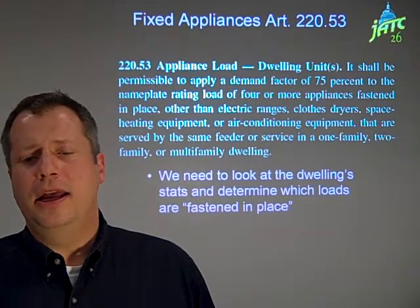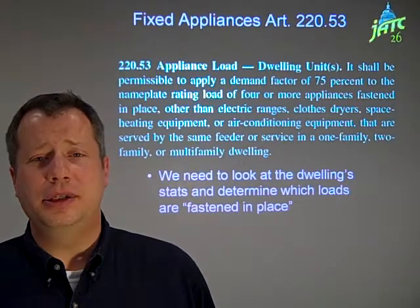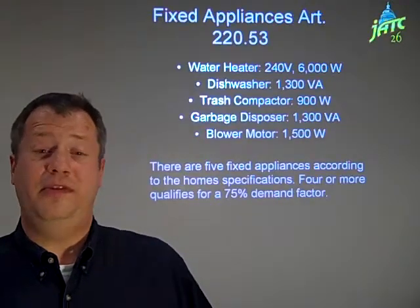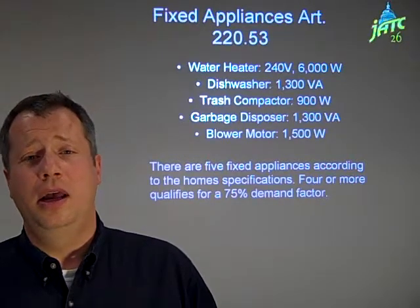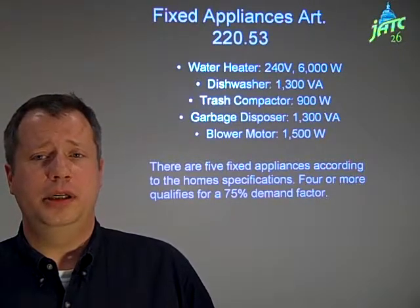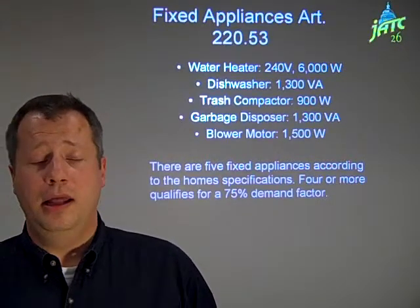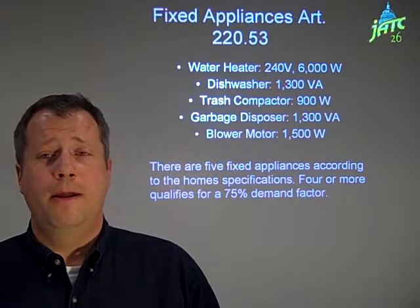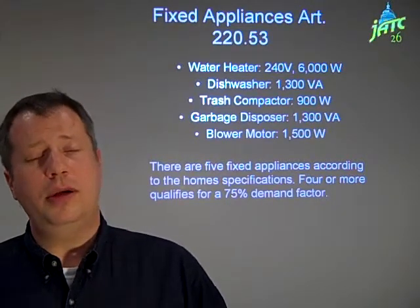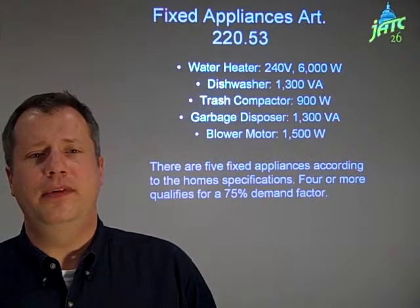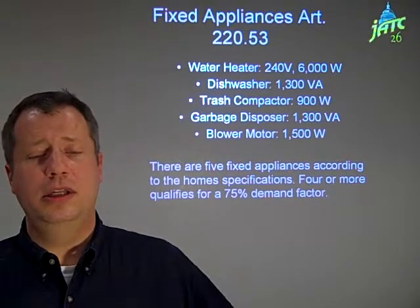Looking back at the stats in the handouts from the beginning of this presentation, this house has five fixed appliances to account for: a water heater, dishwasher, trash compactor, garbage disposal, and a blower motor. That's five, and the code book says if you have four or more, you can apply a demand factor of 75%.